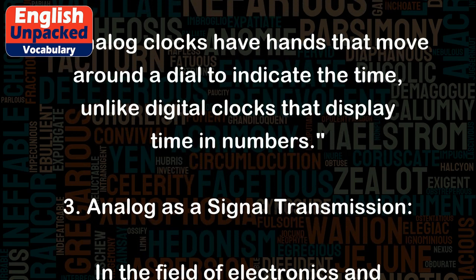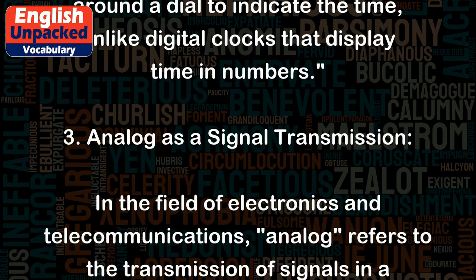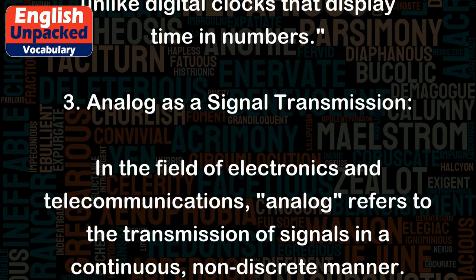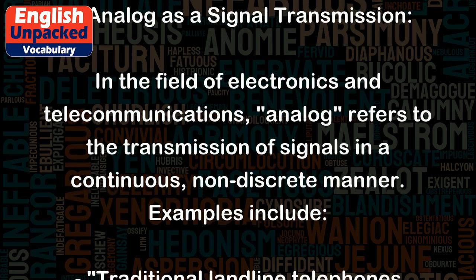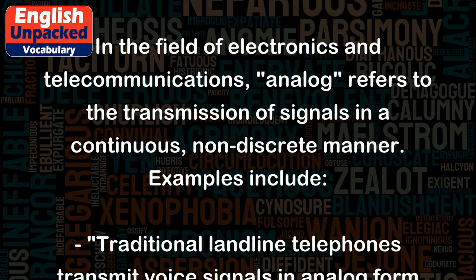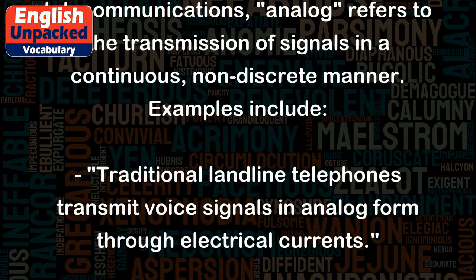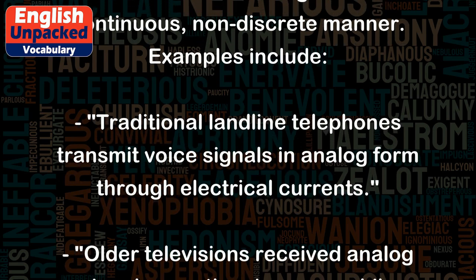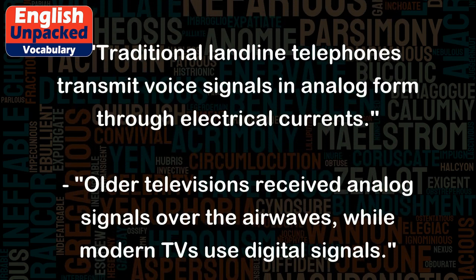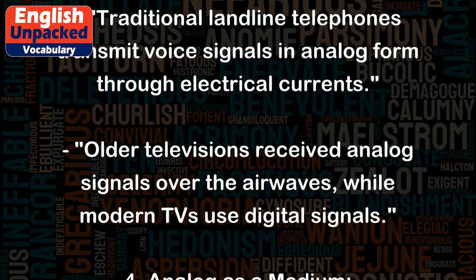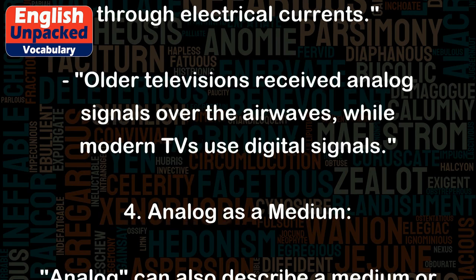3. Analog as a signal transmission. In the field of electronics and telecommunications, analog refers to the transmission of signals in a continuous, non-discrete manner. Examples include traditional landline telephones, which transmit voice signals in analog form through electrical currents. Older televisions received analog signals over the airwaves, while modern TVs use digital signals.